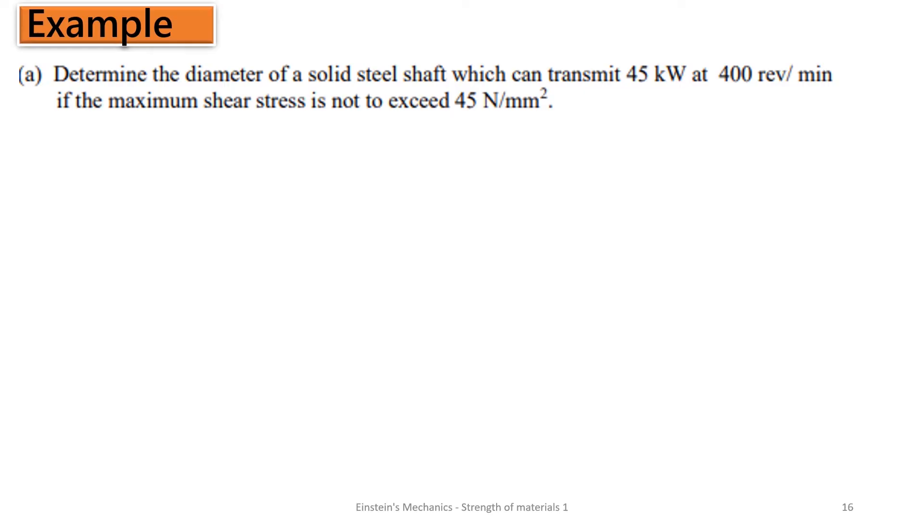It says, determine the diameter of a solid steel shaft which can transmit 45 kilowatts at 400 revolution per minute if the maximum shear stress is 45 newton per mm squared. So straight away, what we have to do here is write down our parameters.